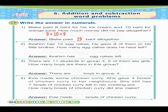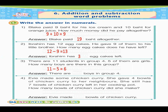In number two, the correct answer is 12 minus 9 equals 3. So Abraham has 12 egg cakes. He gave 9 of them to his little brother. So Abraham has 3 egg cakes left. In number three, 11 minus 5 equals 6. So there are 6 boys in group 4.